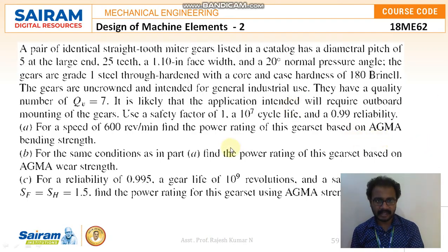So let us go through the question. A pair of identical straight-tooth meter gears listed in a catalog has a diametrical pitch of 5 at the larger end and 25 teeth, 1.1 inches of face width and a 20 degree normal pressure angle. The gears are grade 1 steel through hardened with a core and case hardness of 180 Brinell.